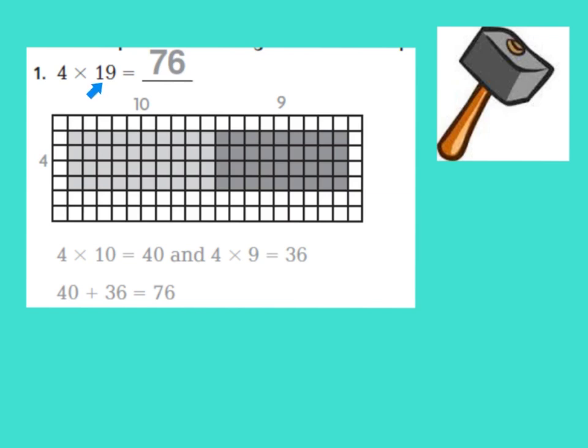They broke apart the 19 into place values. So what they did was they said, 19, I know that the 1 is worth 10, and the 9 is worth 9 ones.